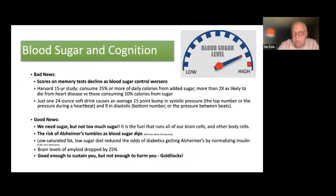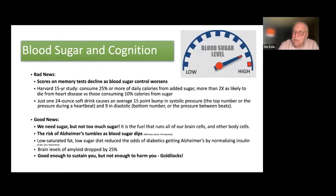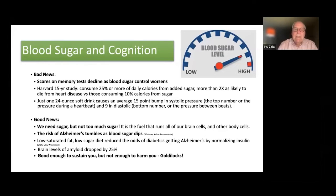Why does this matter? We know something about blood sugar levels and cognition. Scores on memory tests decline as blood sugar control worsens — as you increase your sugar intake, your ability to function on cognitive tests decreases. A Harvard 15-year study showed that individuals who consume 25% or more of their daily calories from added sugar are more than twice as likely to die from heart disease as those consuming only 10% of their calories from sugar.